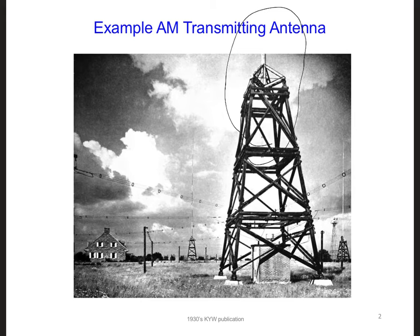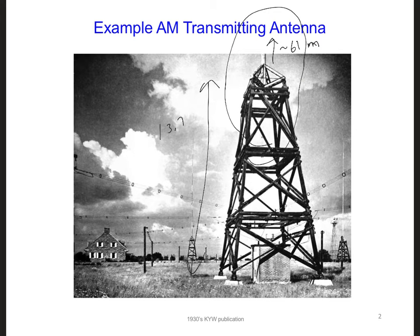For this transmitting antenna, the mast is extending upward here. It's about 61 meters long and it is 13.7 meters above the ground. The most common type of antenna with this kind of shape, where the radiating element is just a long straight wire or a long straight metal structure, is a dipole antenna.